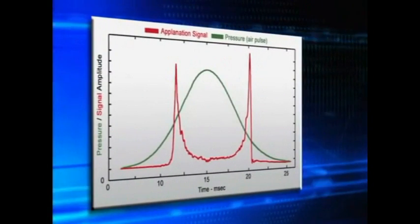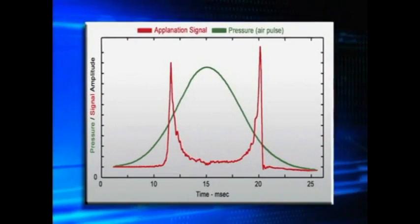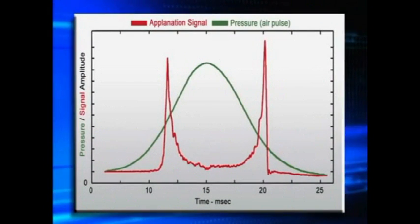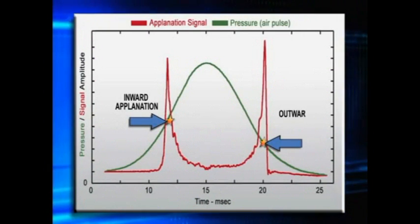The entire measurement process takes approximately 20 milliseconds. The process results in a measurement signal similar to this one. The internal pressure transducer records the pressure required to flatten the cornea at the moment of each applanation event.